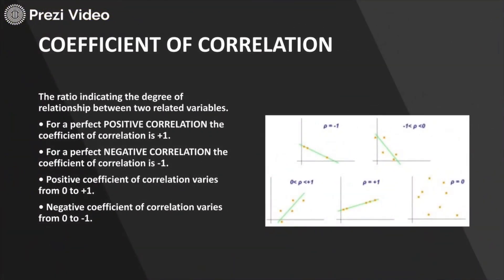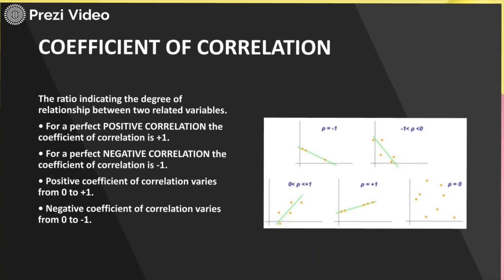The coefficient of correlation is represented by R. For a perfect positive correlation, the coefficient of correlation is plus 1. For a perfect negative correlation, it is minus 1. The positive coefficient of correlation varies from 0 to plus 1, and the negative coefficient of correlation varies from 0 to minus 1.